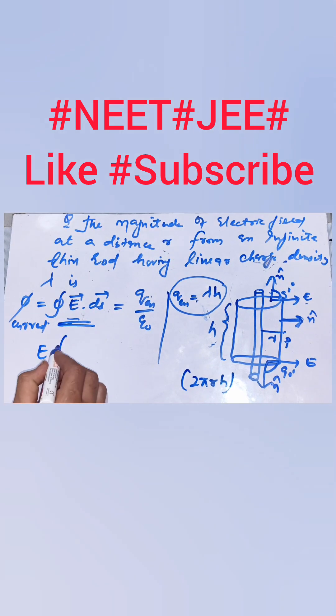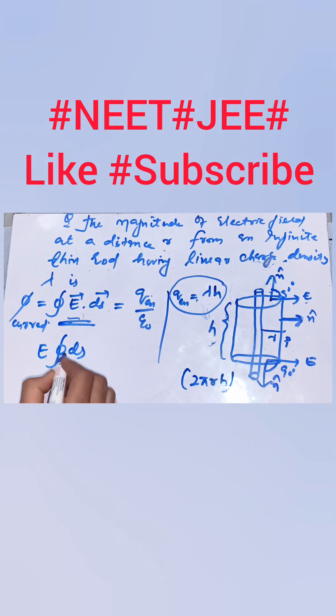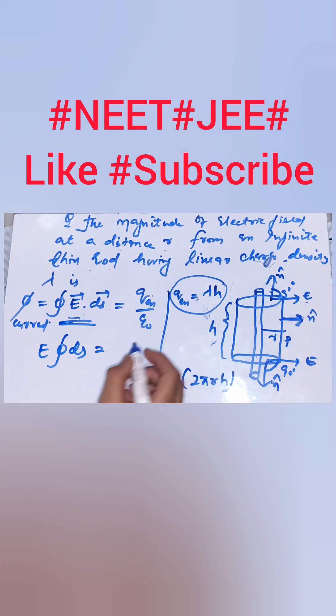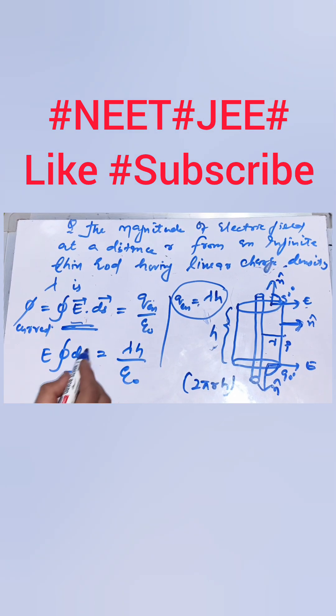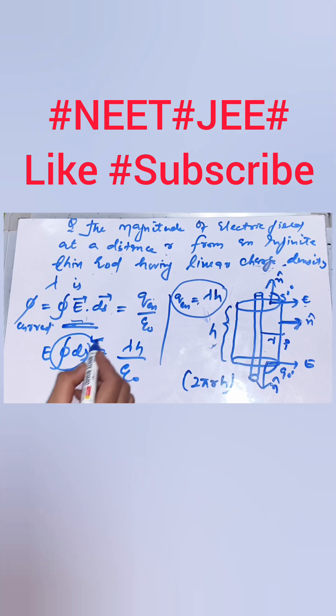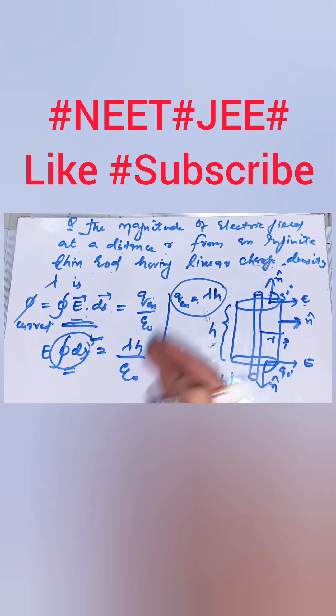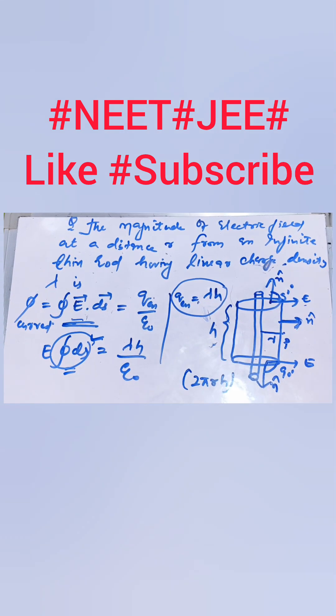I will take E out of the integration, that will be the closed surface integral, which equals Q enclosed. Q enclosed is lambda times h divided by epsilon not. The integration of ds will give us the total curved surface area of this cylinder.